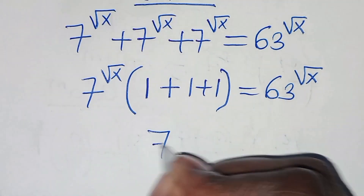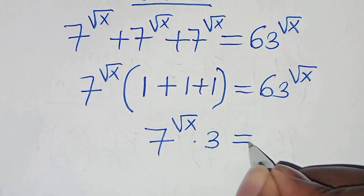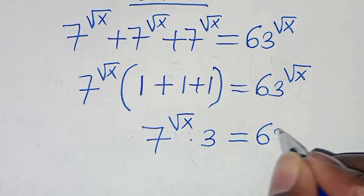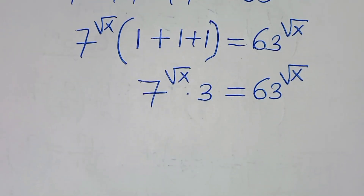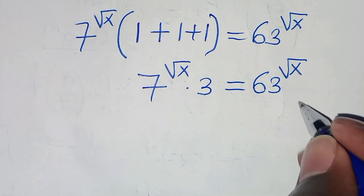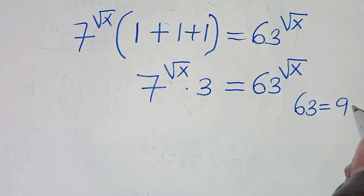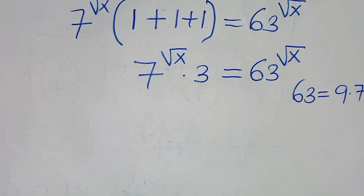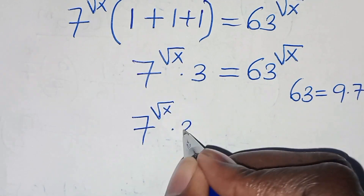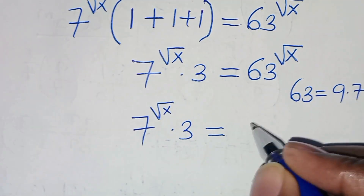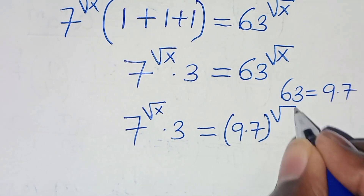The next step: we have 7 to the power of square root of x multiplied by 3, and this is equal to 63 raised to the power of square root of x. We can express 63 as 9 times 7, so this implies we have 7 to the power of square root of x times 3, equal to 9 times 7 raised to the power of square root of x.